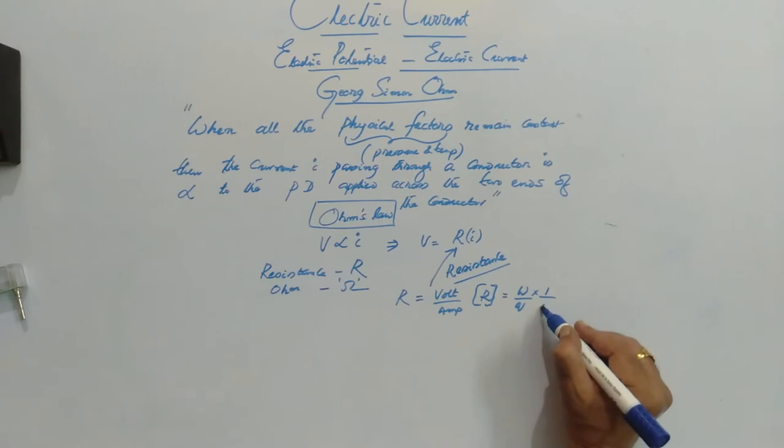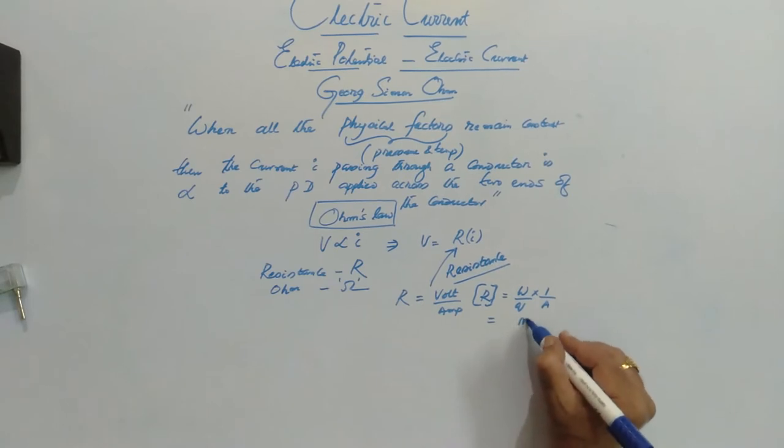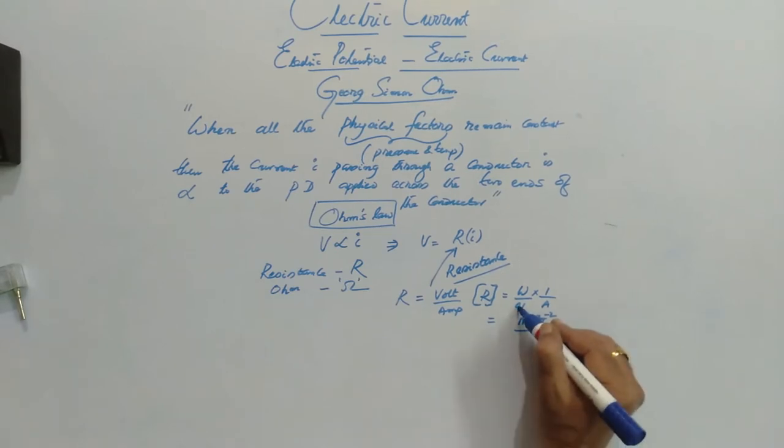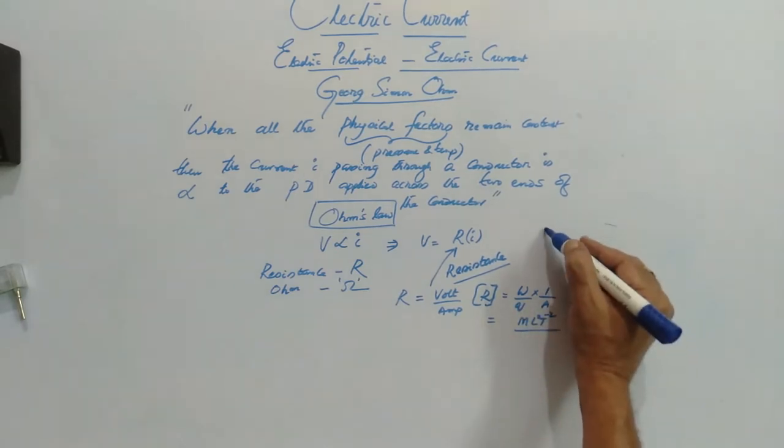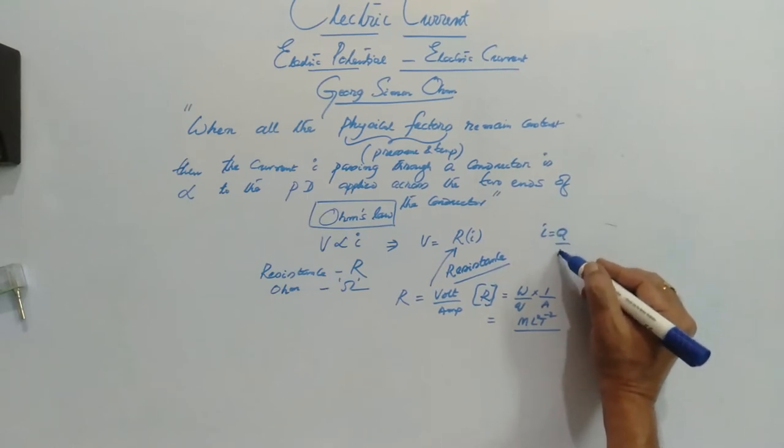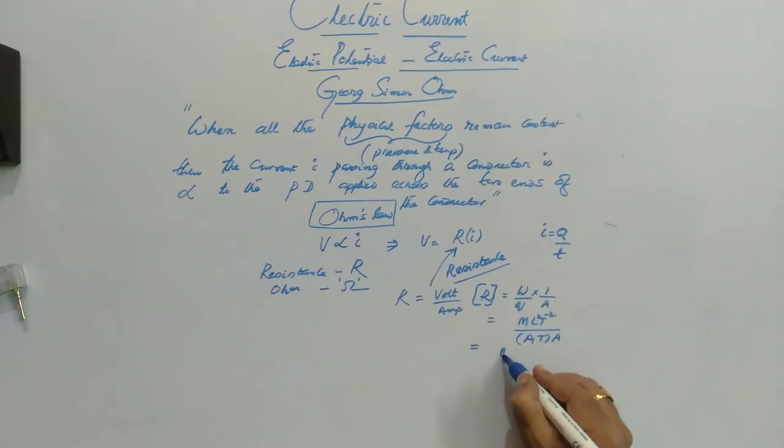so here this is ML² T⁻² Q. We have studied that I is equal to Q by T, therefore Q is equal to IT, therefore ampere times time. So now this is going to be